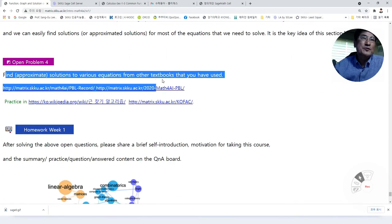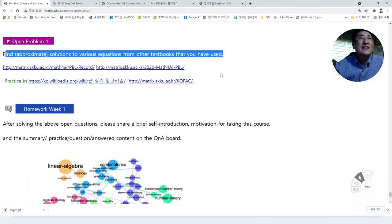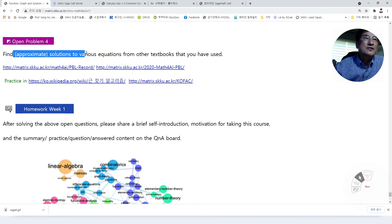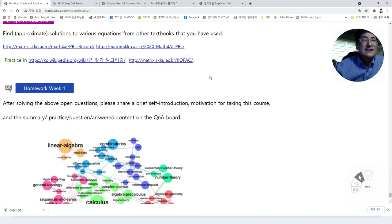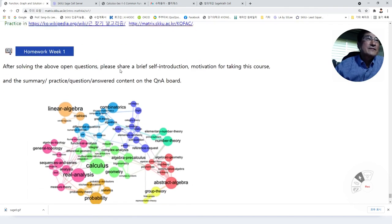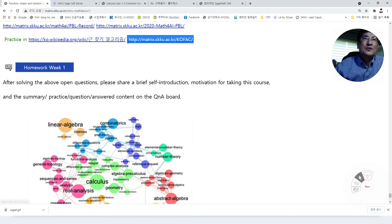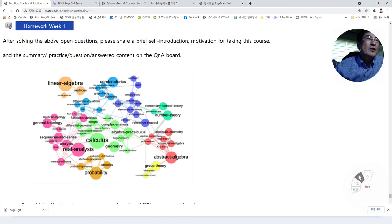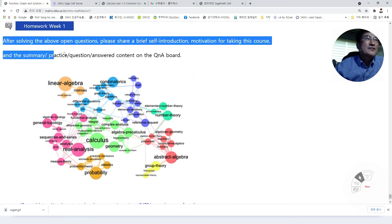Here is the open problem that you supposed to do and to share in Q&A. And here, find the approximated solutions to various equations from other textbooks that you have used so far. Then, you will be able to handle the most of the equations that you had some difficulty for some complicated expressions. And these are the kind of PBI report that you can read for later. You can practice those codes in this web address.